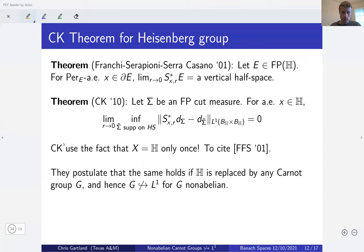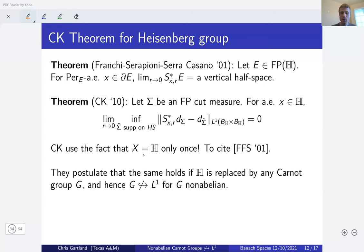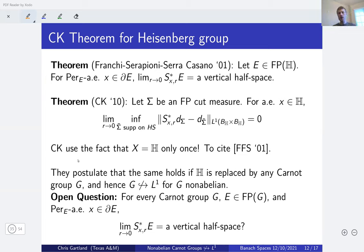In their proof, Cheeger and Kleiner use the fact that they're working with the Heisenberg group only once: to cite the theorem of Franchi-Serapioni-Serra Cassano that blow-ups of finite perimeter sets are half-spaces. They postulated at the end of their paper that the non-embeddability theorem should hold for any Carnot group satisfying the same property — that blow-ups of finite perimeter sets are vertical half-spaces. However, that question is still open. So you cannot directly run the Cheeger-Kleiner argument to prove non-embeddability of general Carnot groups into L¹.